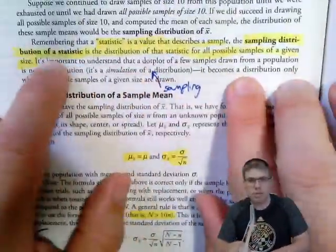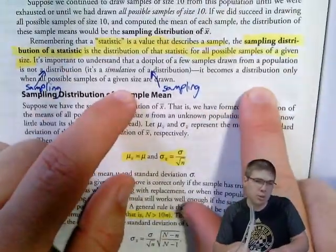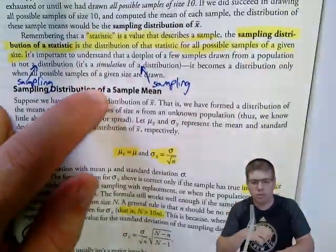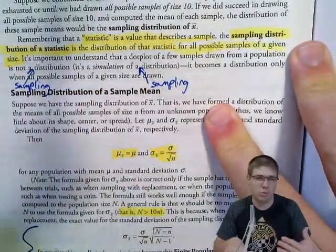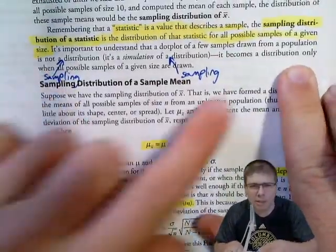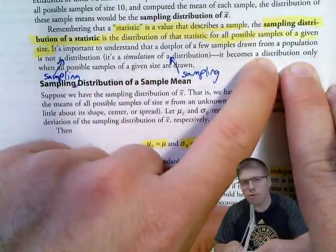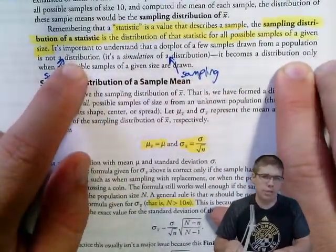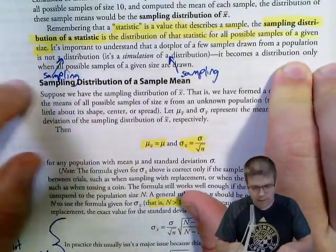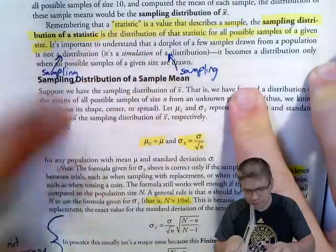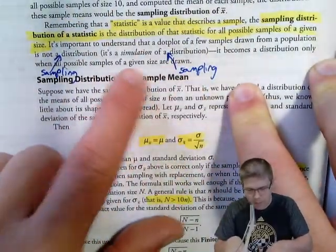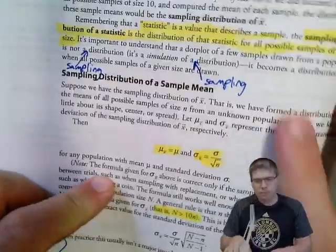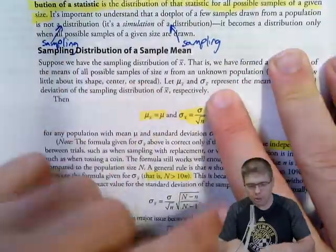Technically, a sampling distribution only exists when you've done all possible samples. If you just simulate a few hundred samples and graph them, that's a simulated sampling distribution — not the actual sampling distribution. If you only take a few samples, you have a distribution, but not a sampling distribution. It's worth being precise about that distinction.